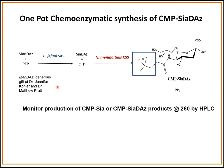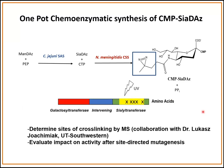We use HPLC to monitor production of our CMP-SIA-DAZ. Once we make CMP-SIA-DAZ, our goal is to use this reagent to photocrosslink to amino acids within the sialyltransferase domain to help us understand more about this enzyme. This enzyme has three domains: the galactosyltransferase domain, an intervening sequence, and the sialyltransferase domain. It is 107 amino acids and about 120 kilodaltons. Like many of these polysialtransferases, there is no known crystal structure.